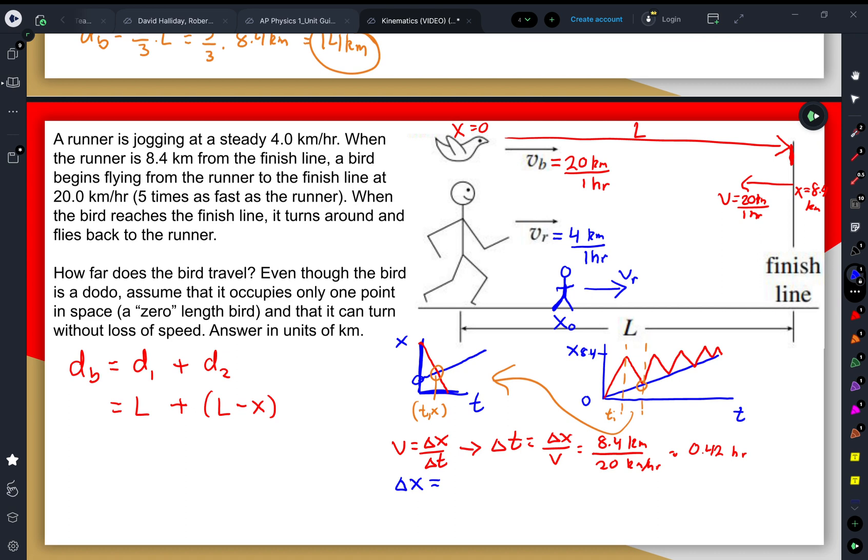So we can calculate that y-intercept by figuring out what that position would have been after that amount of time. Once again, we can rearrange that equation from above to solve for our displacement. Our change in position is equal to our velocity times our change in time. Because we're starting off from a position of 0 for the runner, instead of a displacement, it literally could just be the position at that time of 0.42 hours. So the person runs at 4 kilometers every one hour. And if they're running for 0.42 hours, the hours cancel out. And that means that their starting position would be 1.68 kilometers.